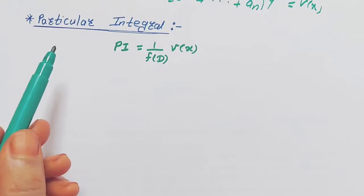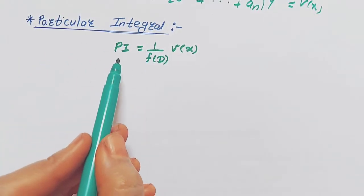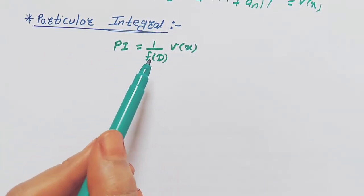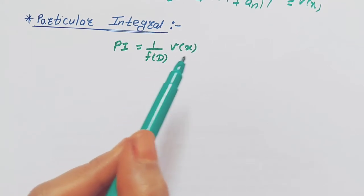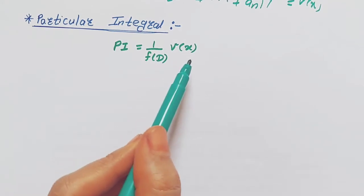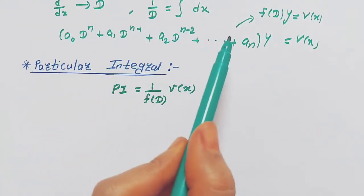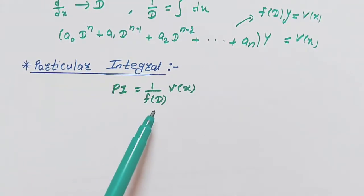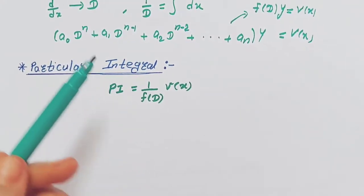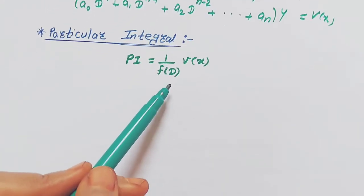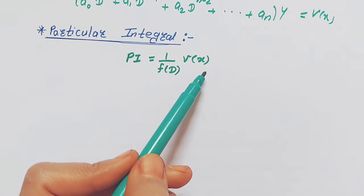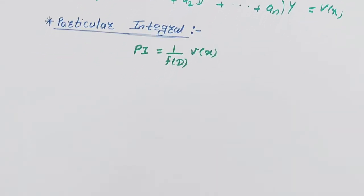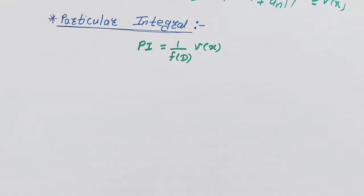To find the Particular Integral, we write PI equals one upon f(D) into v(x). From our equation we identify f(D) and v(x), where v(x) is the right-hand side term.